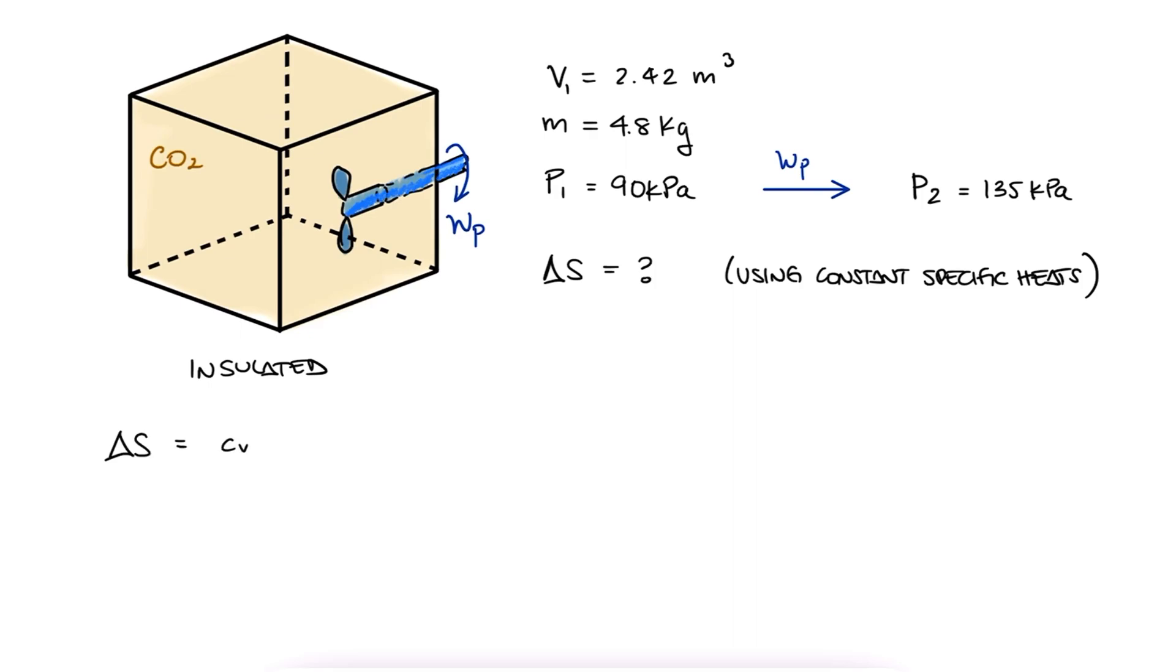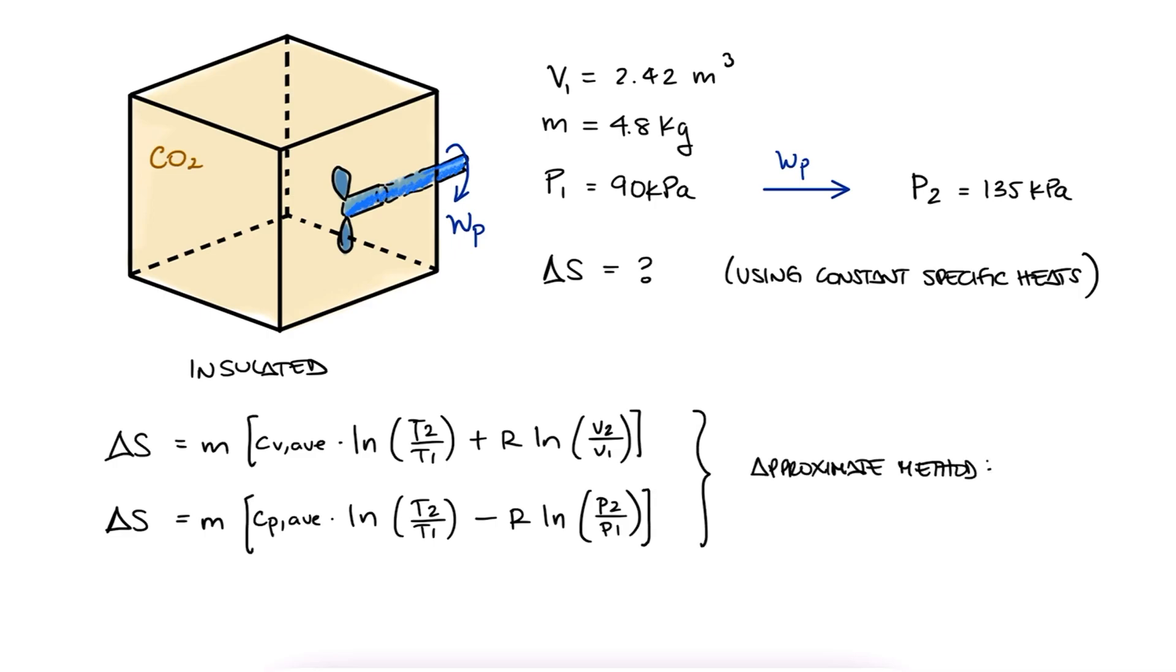From what we covered in the main lecture video, you already know that there are two expressions that allow us to calculate entropy changes when we assume constant or average specific heats. Remember that constant or average specific heats correspond to the approximate, variable, inexact analysis.